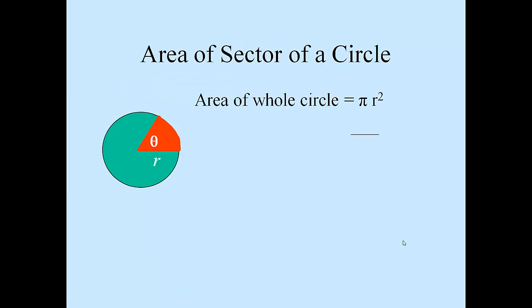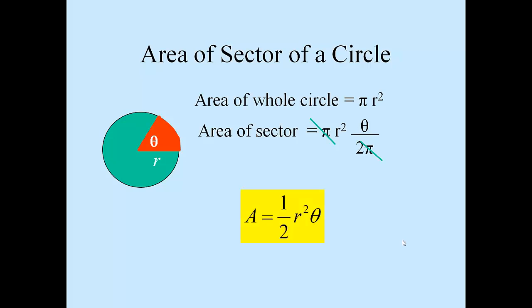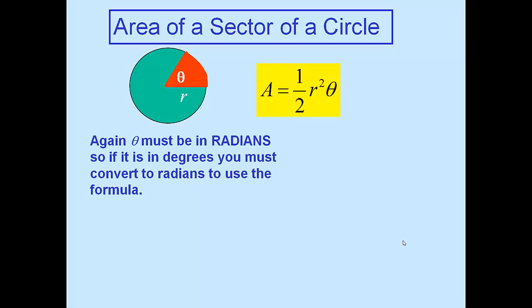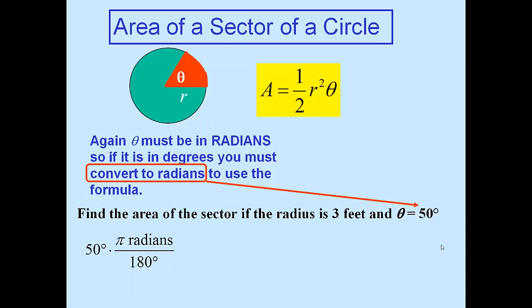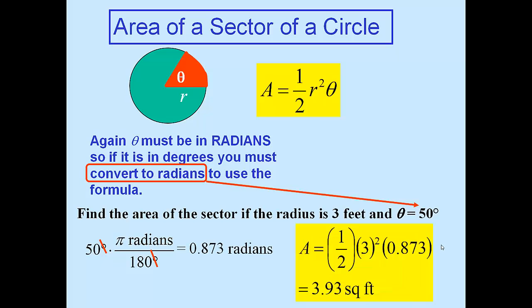Let's look at the area of a sector of a circle — instead of length, we're looking at area, the area of that red shape. The area of a whole circle is πr². We get the area of a sector by multiplying πr² by the fraction theta divided by 2π. The π's cancel out, leaving the formula: area equals one-half r² times θ. Remember, θ must be in radians. For example, find the area of a sector with radius 3 feet and angle 50 degrees. Convert: 50 times π/180 gives 0.873 radians. Then area equals one-half times 3² times 0.873, which gives 3.93 square feet.